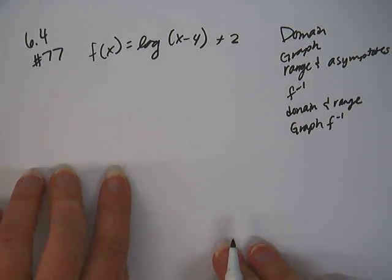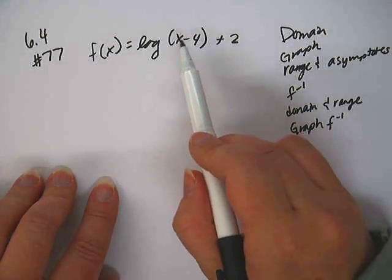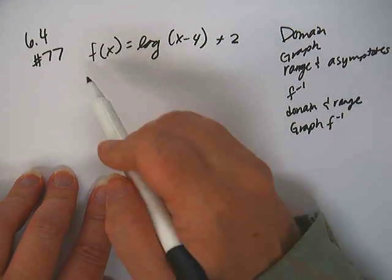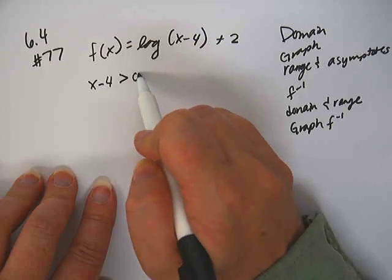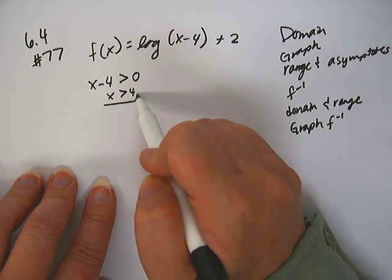Okay, first thing we need to do is find the domain. So we take the stuff that's in the parenthesis that we're taking the logarithm of, and we say that that has to be greater than zero, so x has to be greater than four. So there's the domain.